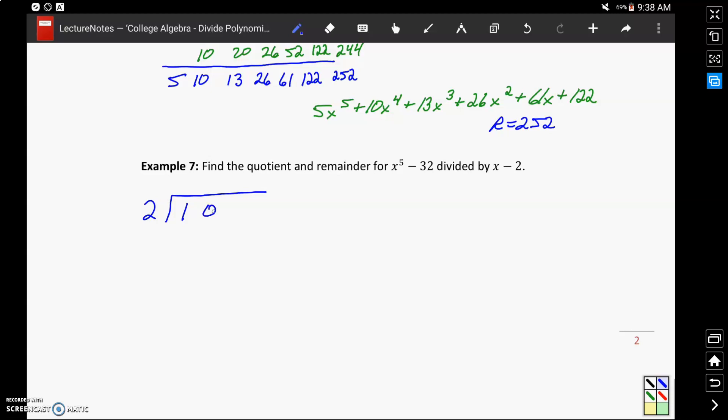So we'll need one for x to the 4th, x to the 3rd, x squared, x, and then that will bring us to negative 32, that constant term at the end.